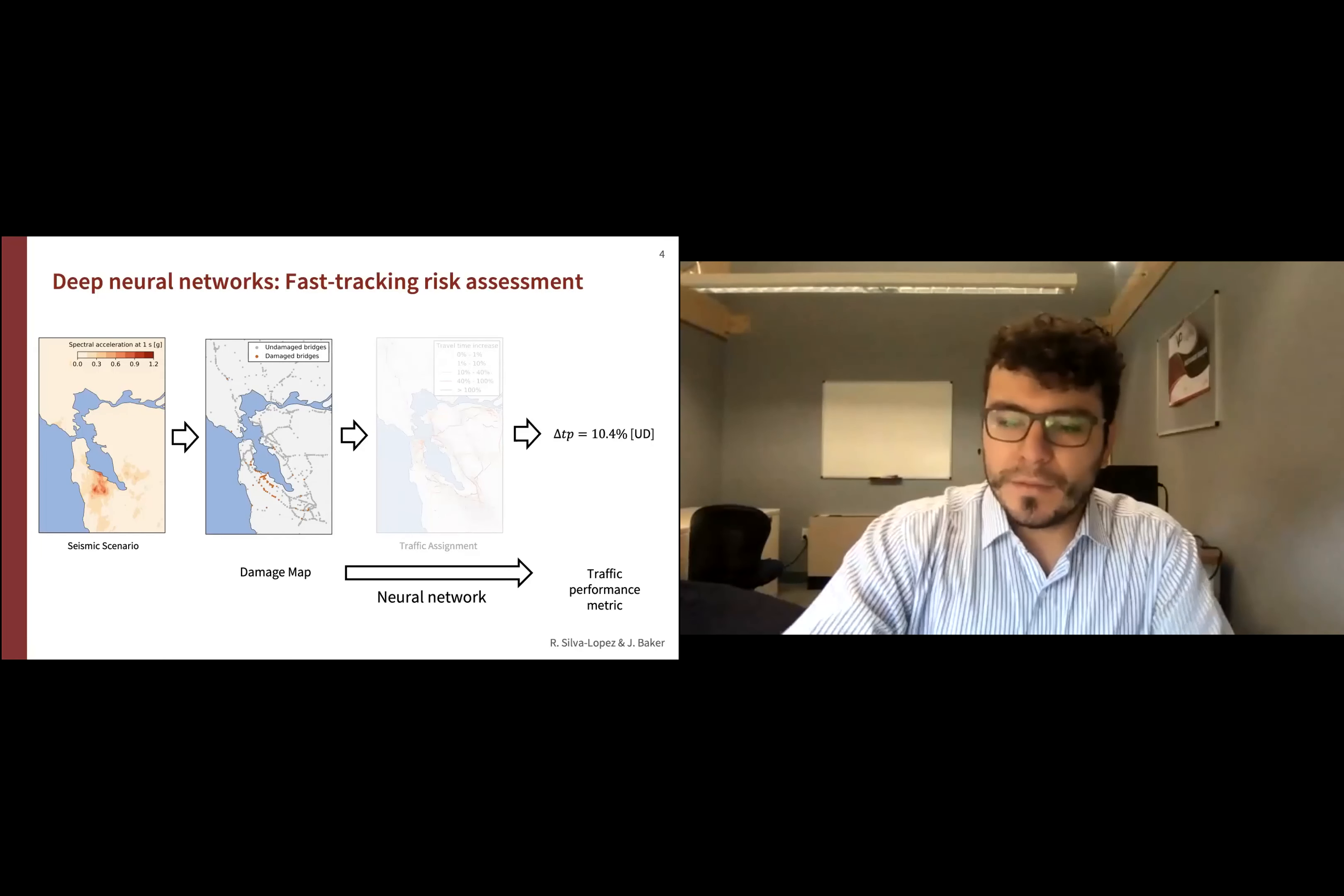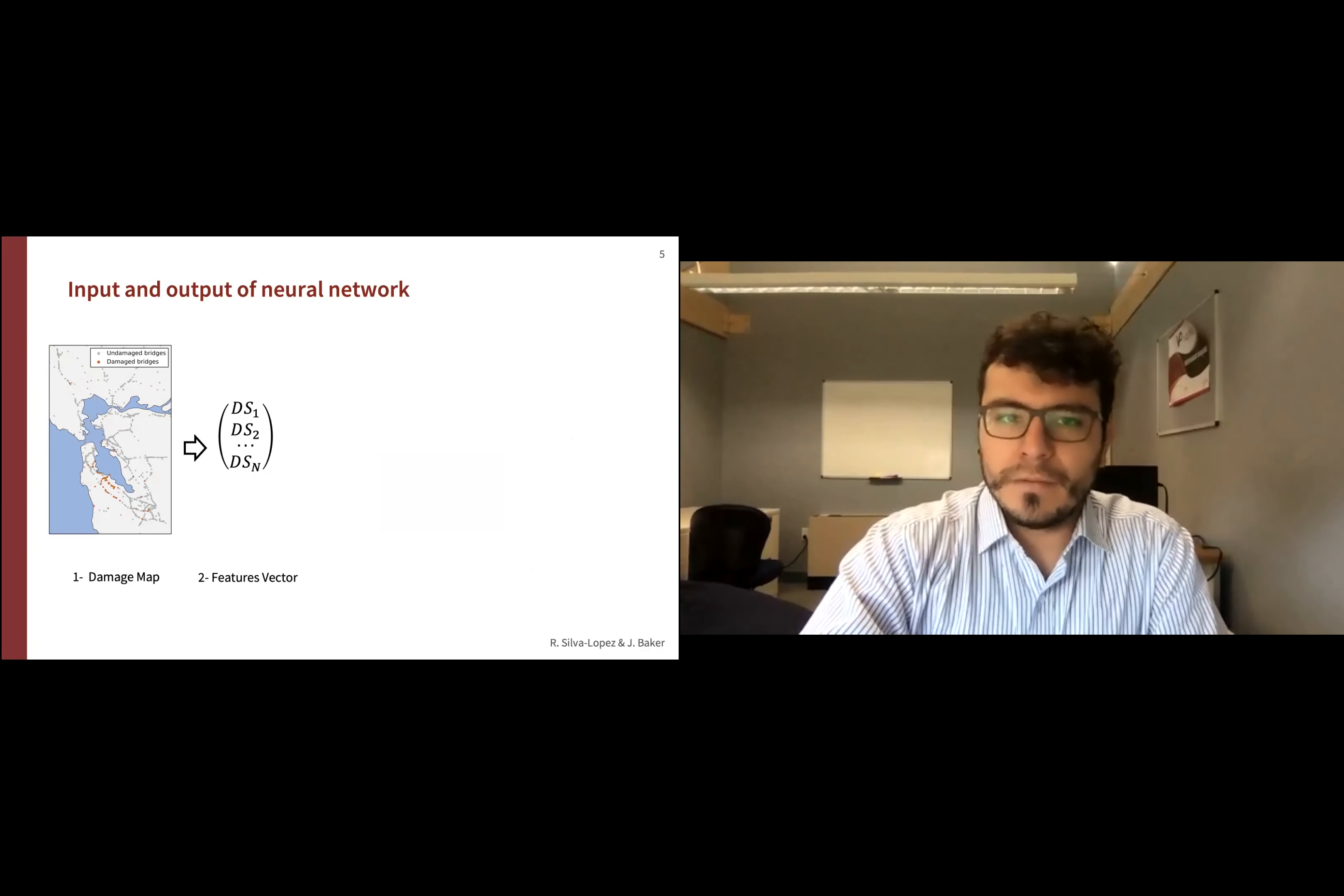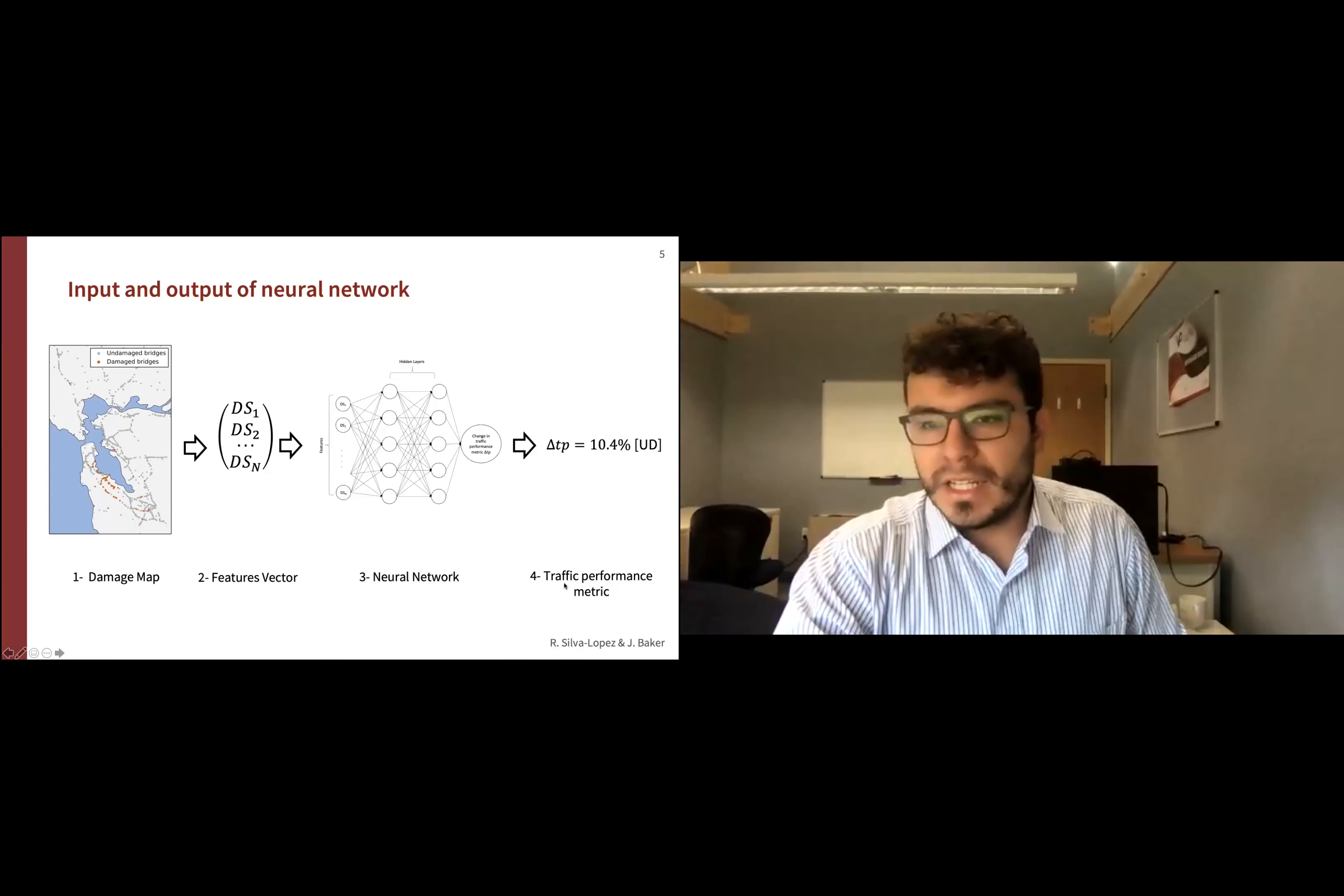Given that we decided to use a neural network to predict traffic performance metrics, the first step is to define the inputs and outputs. As I mentioned, we'll use the damage map as a feature vector in which each bridge is defined by a binary variable - zero if the bridge is usable, or one if the bridge is not functional. That's for all bridges, so you have a vector in our case of 1,743 bridges. That will be used by the neural network, and the output metric will be the traffic performance metric I defined before. The input is the feature vector, the output is the traffic performance metric.